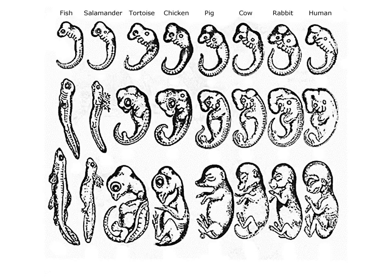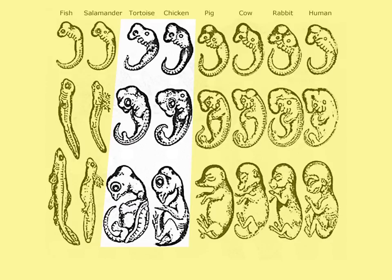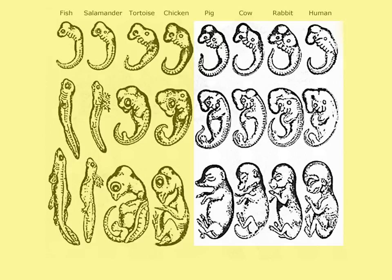This image, if you look at it carefully, suggests there are three distinct groups of more closely related organisms. The first group would be fish and salamanders — they have a very similar pattern of development. The second group would be tortoise and chicken, who again have a similar pattern of development. The final group would be pigs, cows, rabbits, and humans — what we call mammals — suggesting they have a common pattern of development and are more closely related.